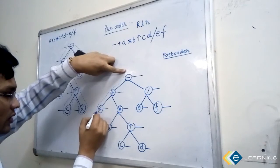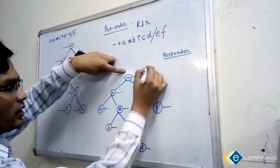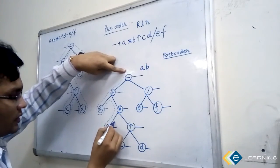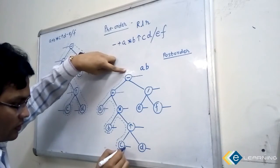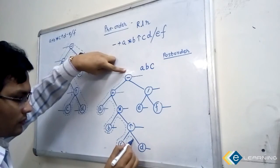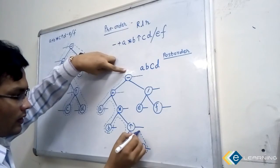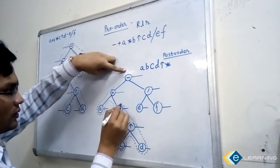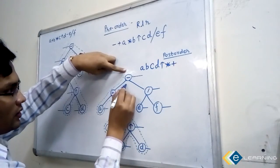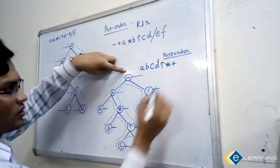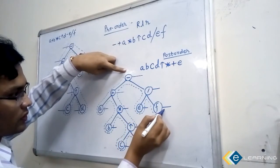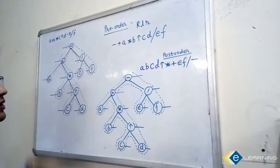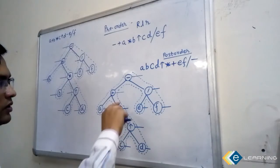Traverse from root. This node is going to intersect — write down A. Now write B. Now C and D, and this is power. Then this line is intersecting — write star. Then this is plus. Now cross E, then F, then divide, and make it minus. This is the corresponding post-order of this tree.